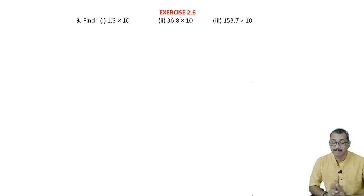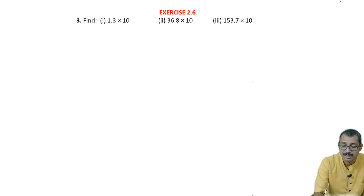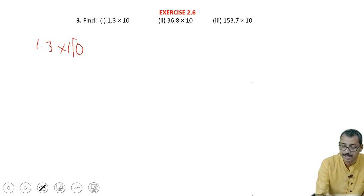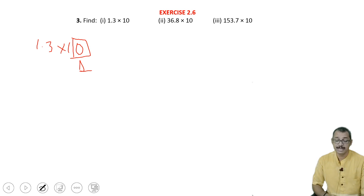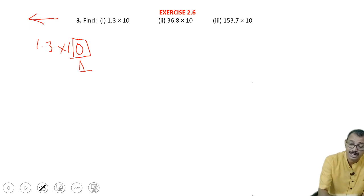Here a decimal number is multiplying with 10, 100, 1000, etc. Now how it is to be done? Here it is 1.3 into 10. Now what you have to see is how many zeros are there. There the decimal place we counted — here zeros you have to count. There, from right to left we took; now here the decimal place must be shifted from left to right.